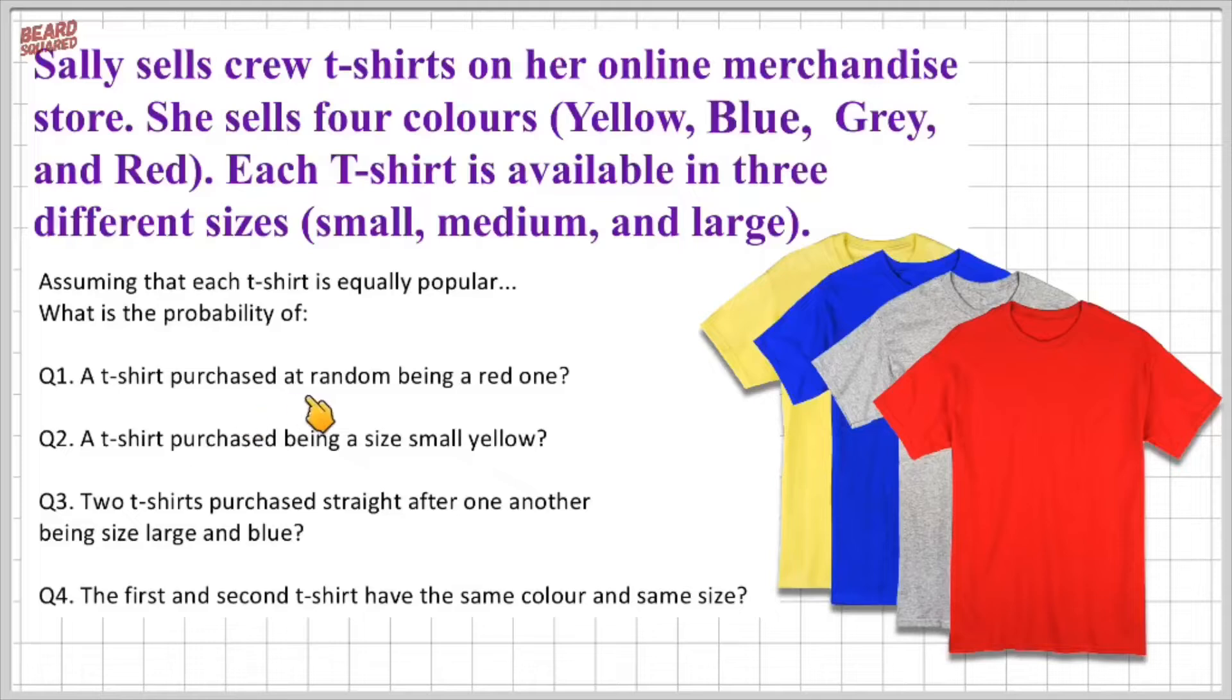Question one, a shirt purchased at random being a red one. Question two, a t-shirt purchase being a size small yellow. Question three, two t-shirts purchased straight one after the other, size large and blue. And question four, the first and second t-shirt have the same color and the same size.